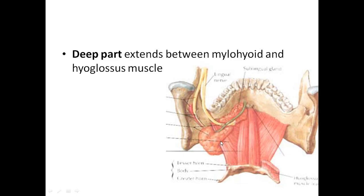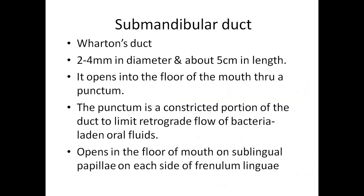The deep part of the gland hooks around the posterior border of the mylohyoid to reach the floor of the oral cavity. It is sandwiched between the mylohyoid on the outer (lateral) aspect and the hyoglossus — a muscle running from the hyoid bone towards the lateral margin of the tongue — on the medial aspect.